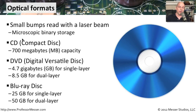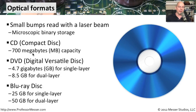Another common type of storage media is optical formats — everything from CD-ROMs to DVD-ROMs to Blu-ray disks. They all work the same way: at a very tiny level there is a series of bumps on the disk, and a laser beam reads those bumps to know what data is encoded. For CD-ROMs, the capacity is about 700 megabytes of storage. DVD — digital versatile disk — can fit 4.7 gigabytes on a single layer, and a dual layer gives 8.5 gigabytes. Blu-ray gives 25 gigabytes for a single layer and 50 gigabytes for a dual layer.